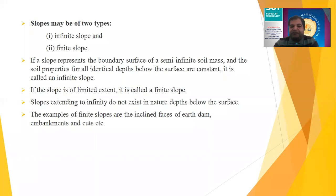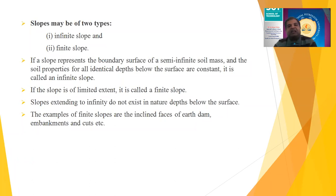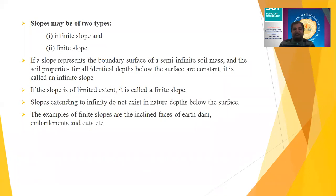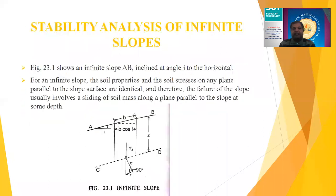If the slope is of limited extent, it is called a finite slope. Examples of finite slopes include earth dams, earth embankments, road cuts, and most types of slopes encountered in practice. Today we are going to see how infinite slopes are analyzed and how their stability can be found out.